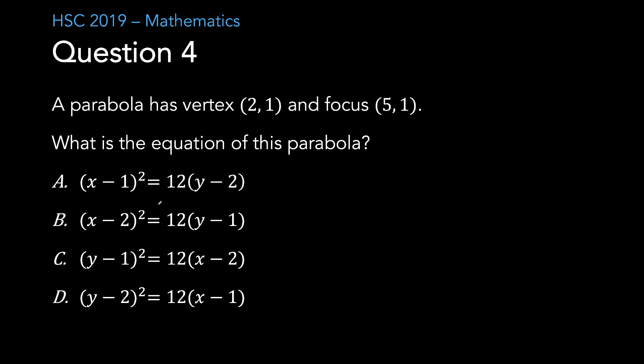Question 4. A parabola has vertex 2, 1 and focus at 5, 1. What is the equation of this parabola? The best way is to mark them on the graph. My vertex is at 2, 1 and my focus here at 5, 1. You can tell that my parabola is going to be concave to the side because your focus and your vertex are always in line with one another.